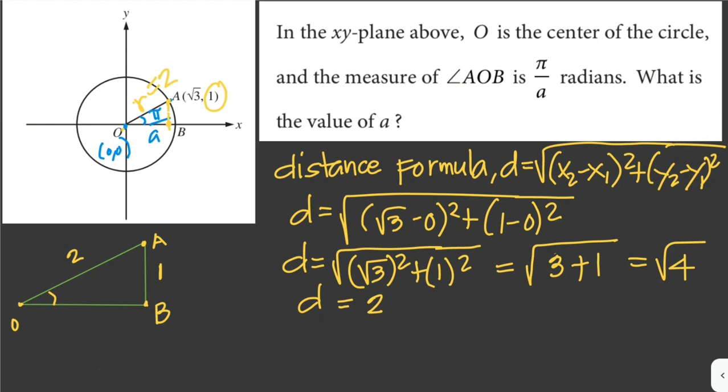We can use sine of angle AOB is just equal to opposite over hypotenuse, which is 1/2. And to find the angle, angle AOB is just equal to the sine inverse of 1/2, and sine inverse of 1/2 is just equal to 30 degrees.